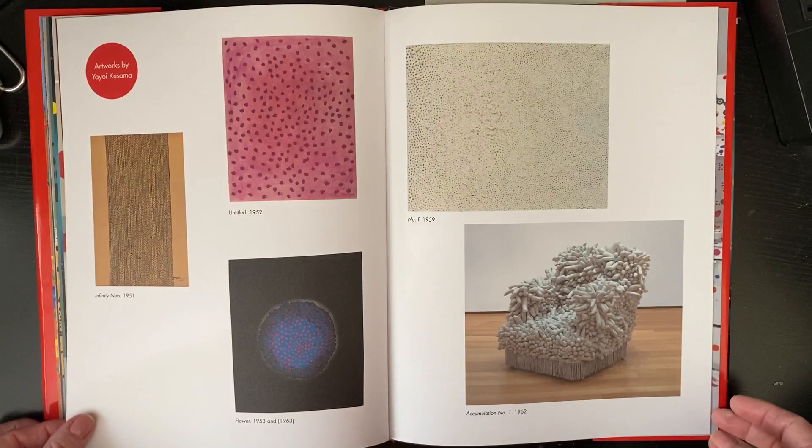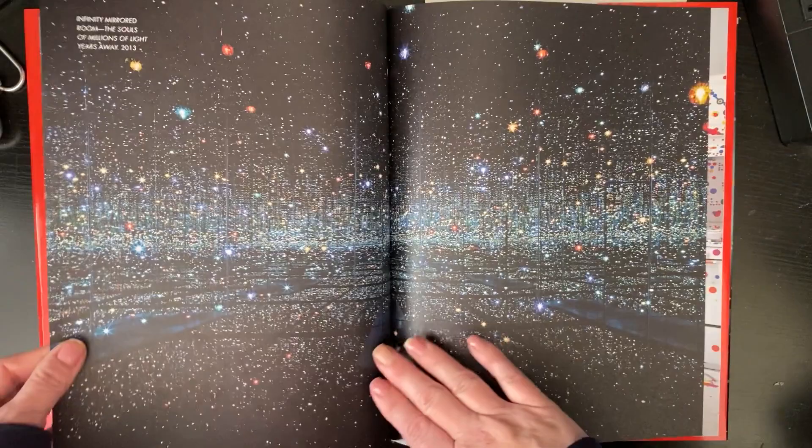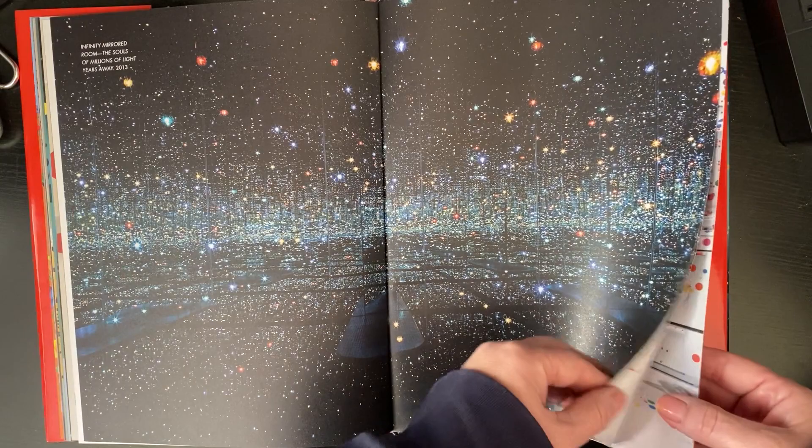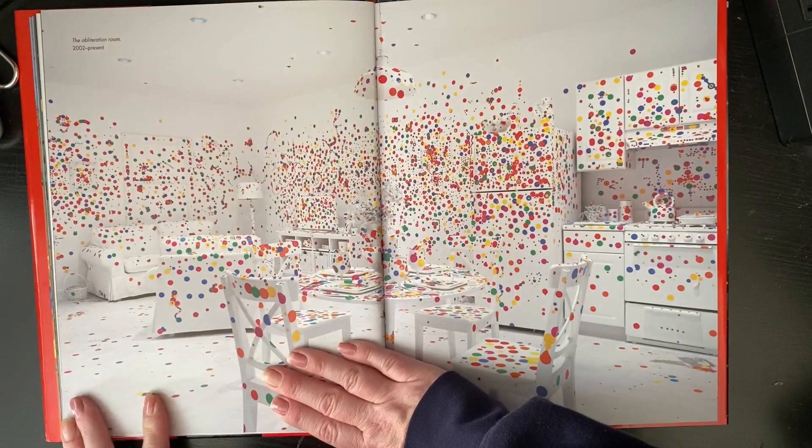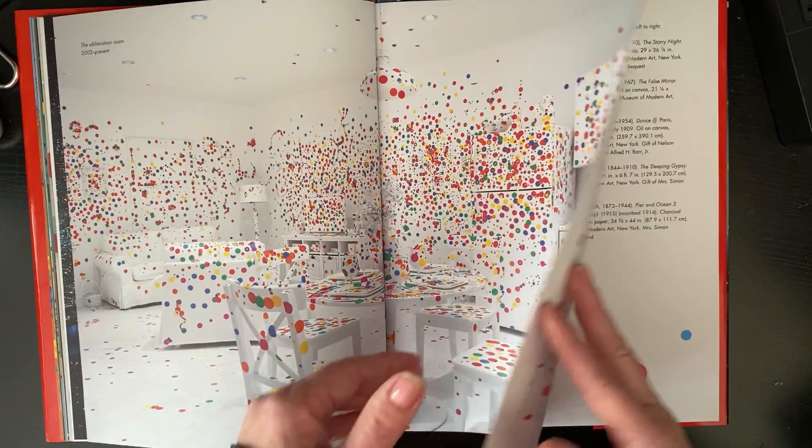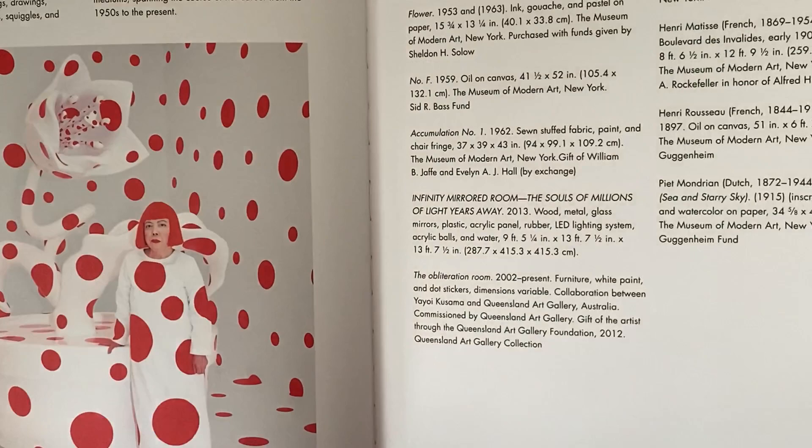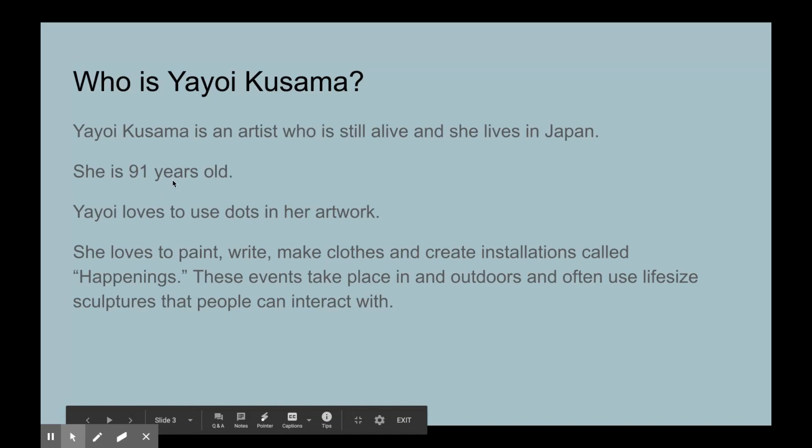She still lives in Japan and she continues to paint her dots every day. Here are some examples of her artwork. Here is an example of one of her mirrored rooms, another example of an installation called the Obliteration Room, and here is a real picture of her in one of her installations. I hope you enjoyed the story. She has gone back to Japan and still lives there now. She is 91 years old.